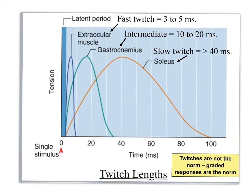This slide shows three different muscles with their twitch graphs — time in milliseconds versus force. Eye muscles are very small and engage very rapidly: within five milliseconds the twitch has peaked and returned to relaxation at ten milliseconds. Gastrocnemius takes longer — the latent period is longer, contraction is slower, it peaks later, then comes back down.